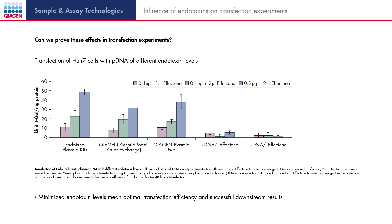In the experimental data shown here, very sensitive human hepatoma cells were used. An increase in transfection efficiency is observed when using increased amounts of plasmid and Effectene transfection reagent. However, if the amount of Effectene transfection reagent was to be increased to 4 microliters, we would observe an opposite effect. Despite low endotoxin levels, the transfection efficiency would be reduced again, because too much transfection reagent causes additional cellular stress.